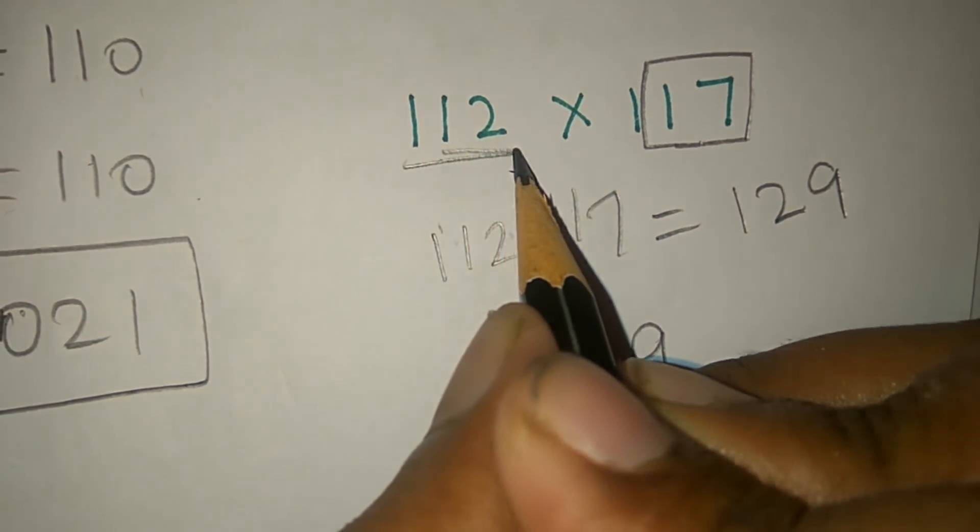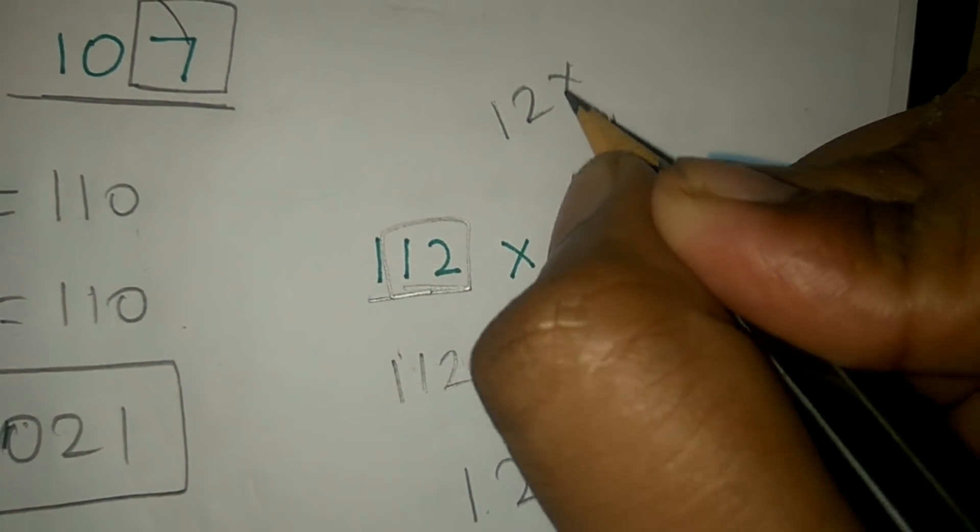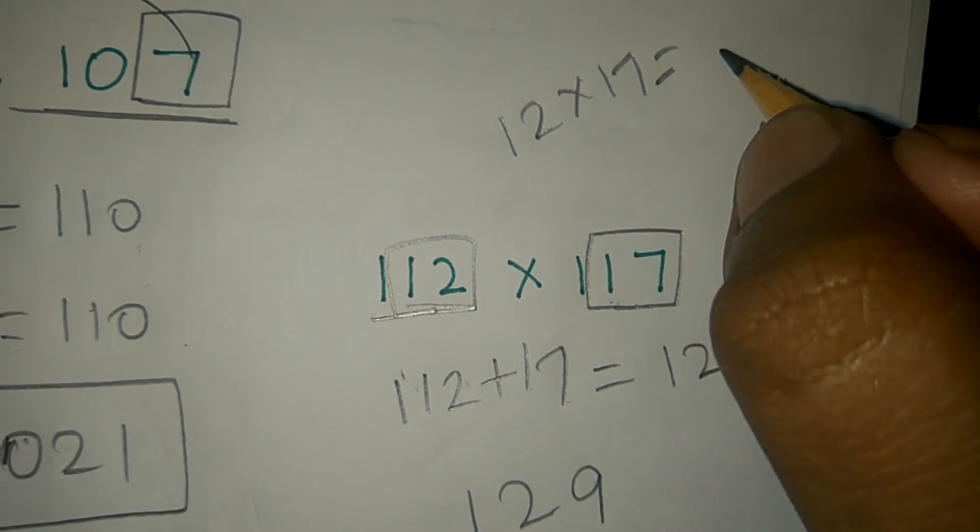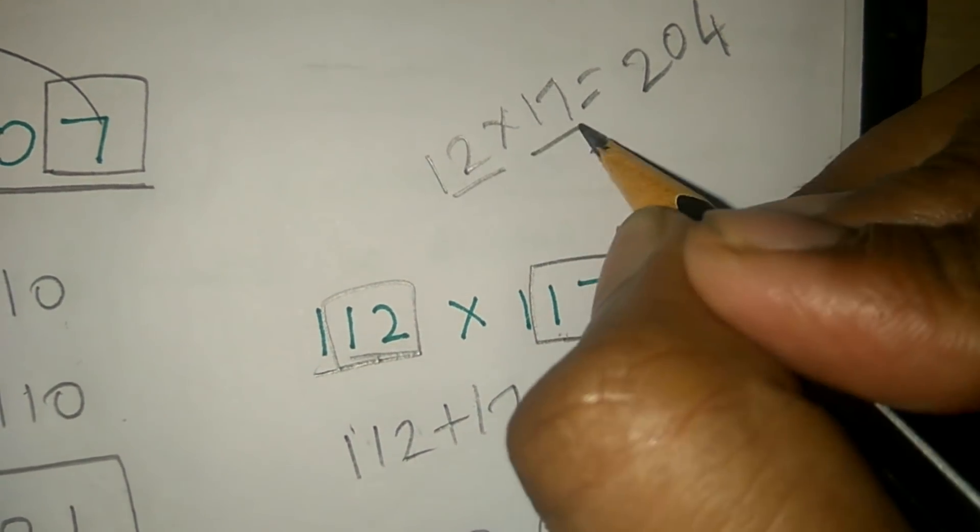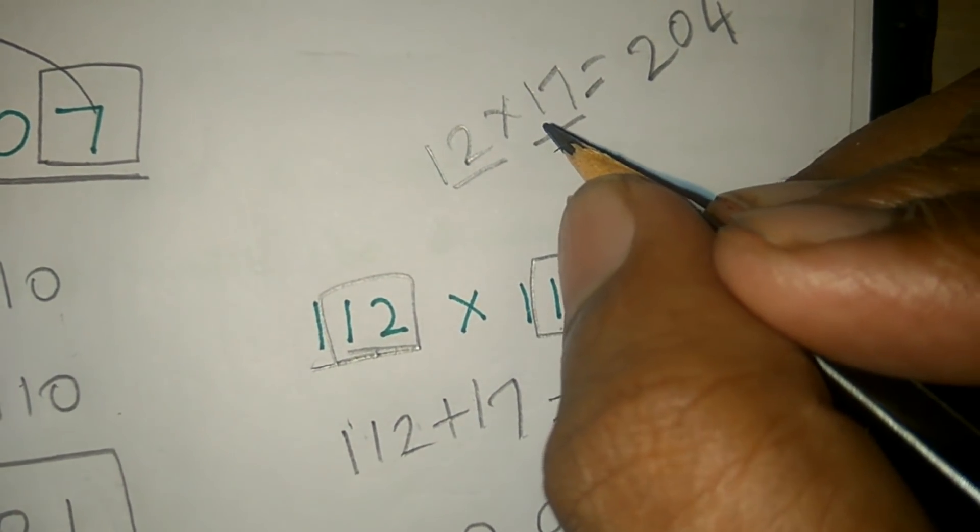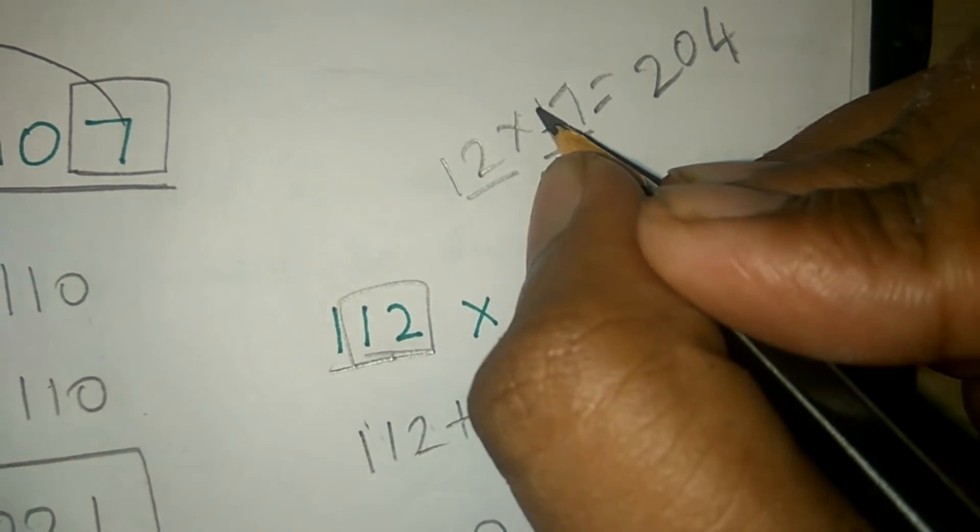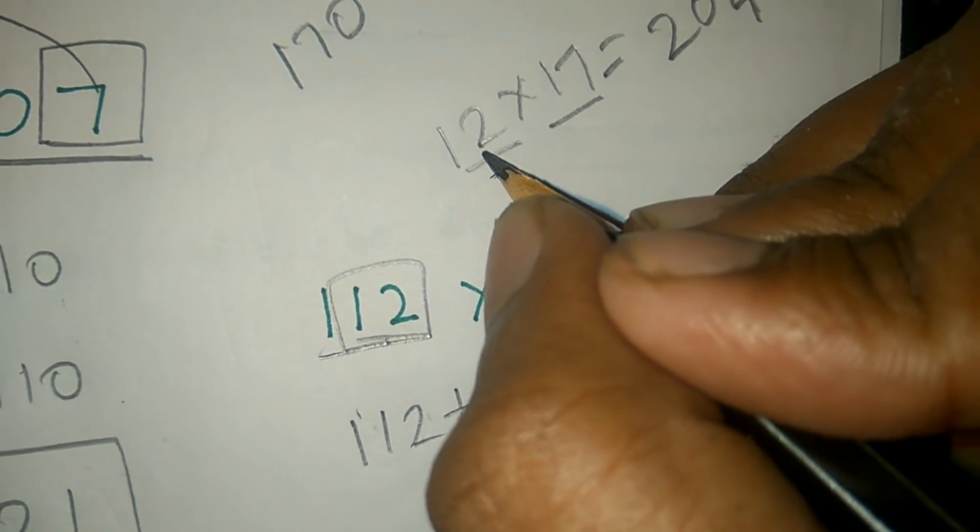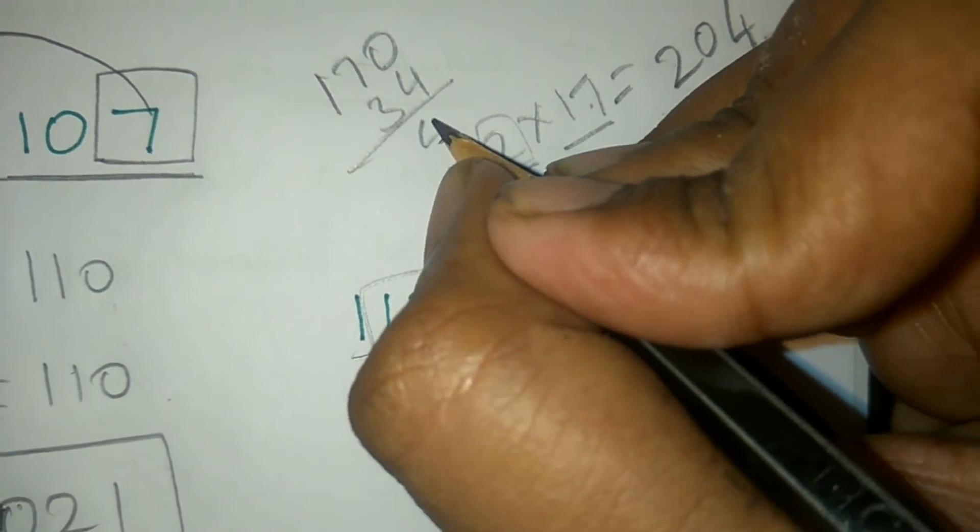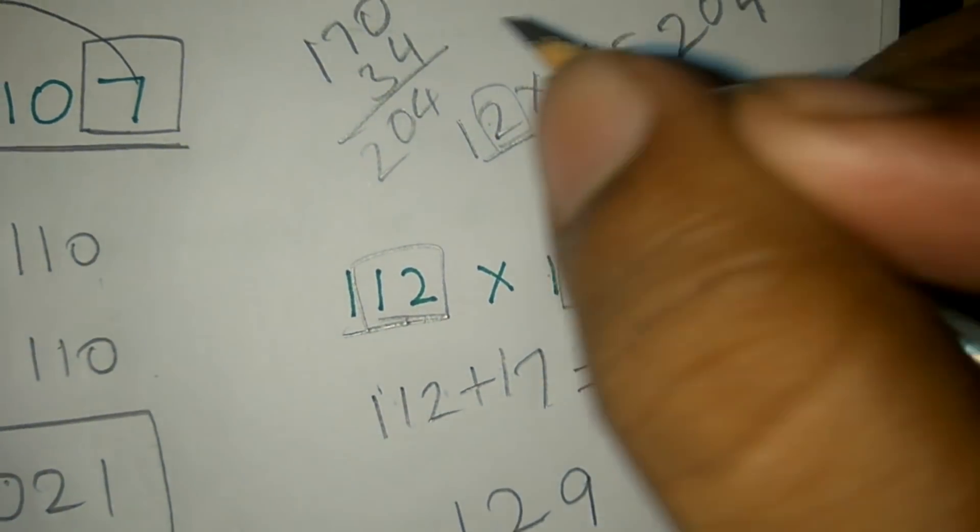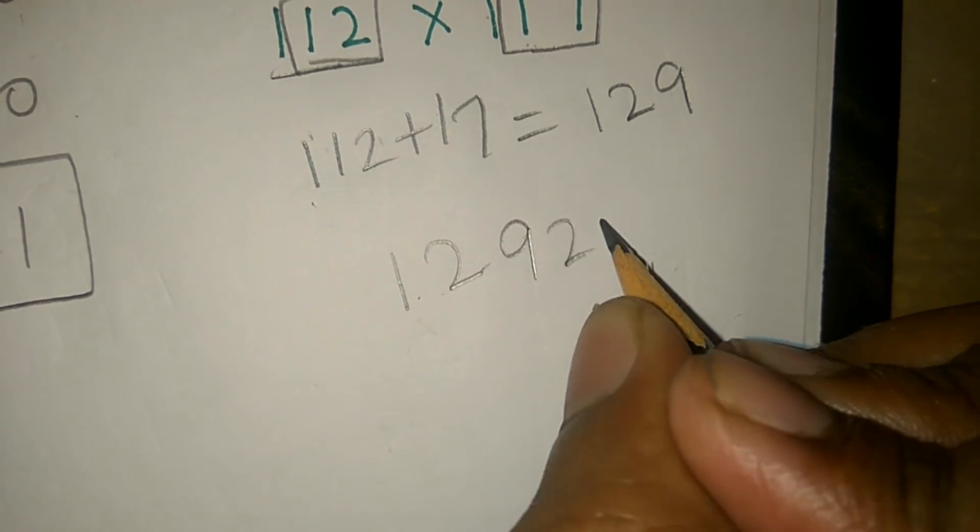Next, here is 12 x 17, so 12 x 17 is 204. So if you multiply 12 x 17, we can do 10 x 17 and 2 x 17. So it's 24, so then 204.